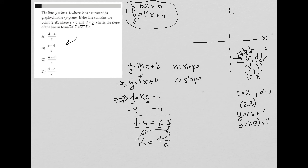So that I'm left with k equals d minus 4 over c, which is d minus 4 over c, which is answer choice a. Thank you.